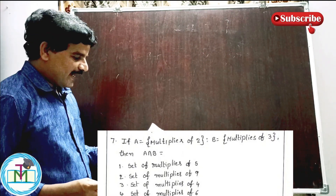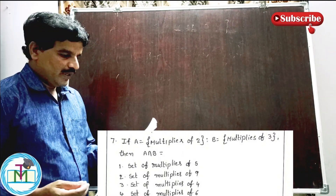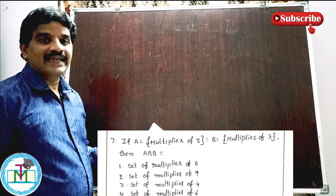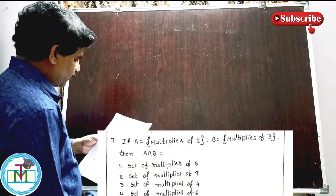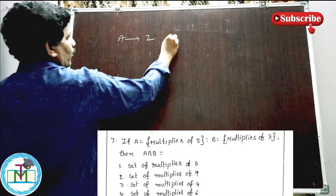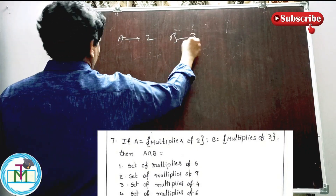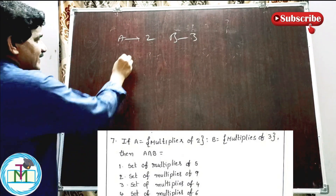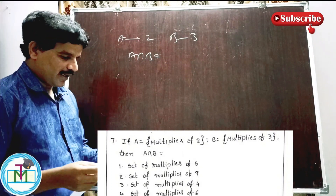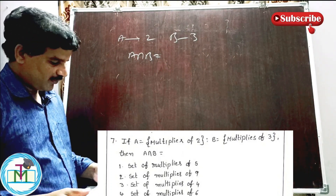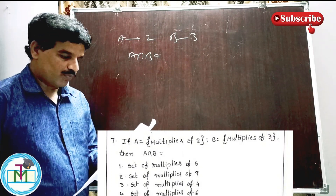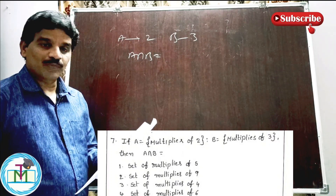Question number seven: set A contains multiples of 2, set B contains multiples of 3. Then A intersection B is equal to what? The options are: option 1 — multiples of 5; option 2 — multiples of 9; option 3 — multiples of 4; option 4 — multiples of 6.